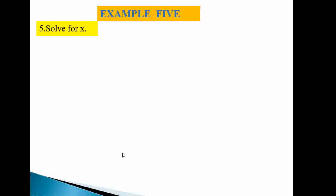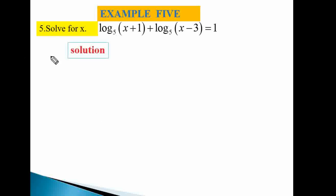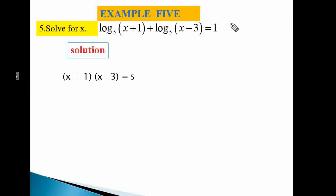Example five: log₅(x + 1) + log₅(x − 3) = 1. To find x, rewrite 1 as log₅(5), since log₅(5) = 1. Then, using the addition of logs rule, log₅(x + 1) + log₅(x − 3) = log₅[(x + 1)(x − 3)].